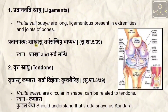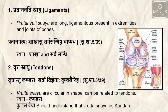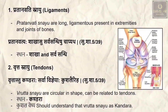By modern correlations also, most of the ligamentous and tendinous parts are found in the extremities. For example, at the knee joint — where femur, tibia, fibula, and patella meet — the main ligaments include the anterior cruciate ligament, posterior cruciate ligament, lateral collateral ligament, medial collateral ligament, and articular cartilage. These structures illustrate pratanavati snayu in the leg extremities.